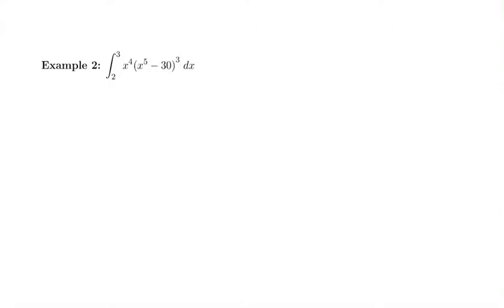Let's try to do another product rule here. We're going to take the integral from 2 to 3 of x to the 4th times x to the 5th minus 30 to the 3rd. Definitely would be a product rule and a chain rule for a derivative, and so when it looks like that we know we're going to use u-substitution for the antiderivative.